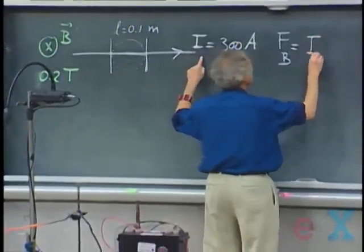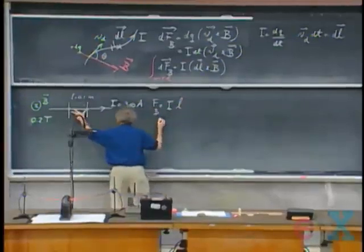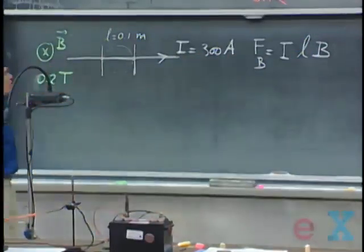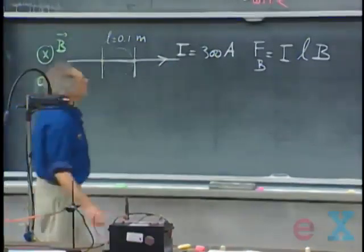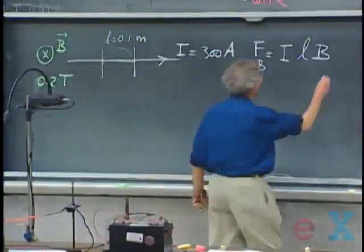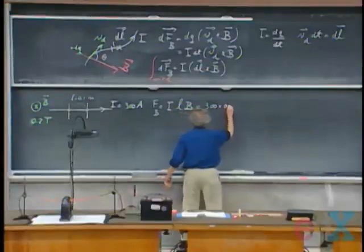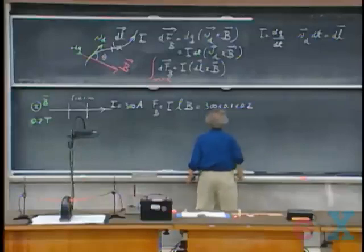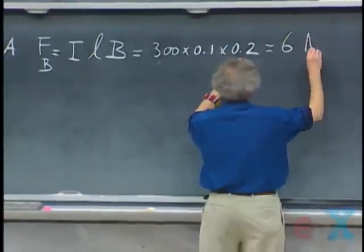Is the current I, which we have there. We get the length L, which is this length, multiplied by the magnetic field. There is no sine anywhere because the angles are ninety degrees. And so I find that that force is three hundred times zero point one times zero point two. So that is thirty times point two. That is about six Newton.